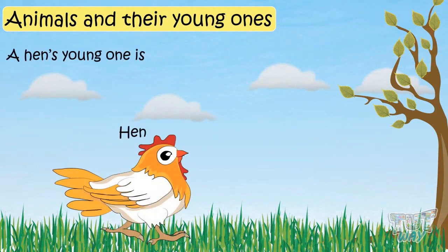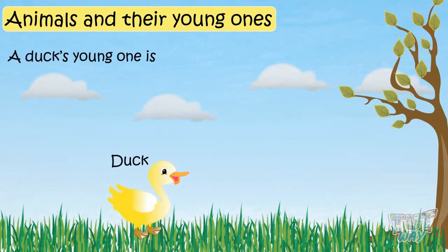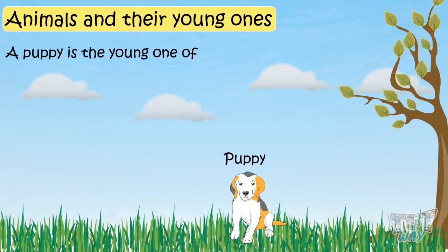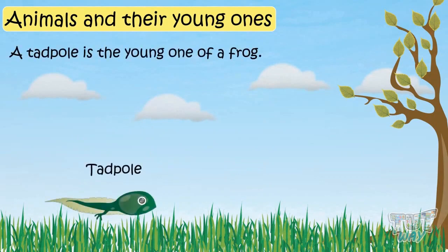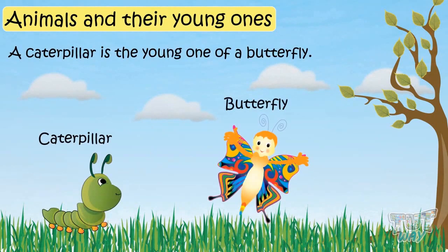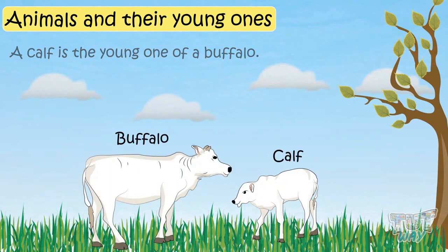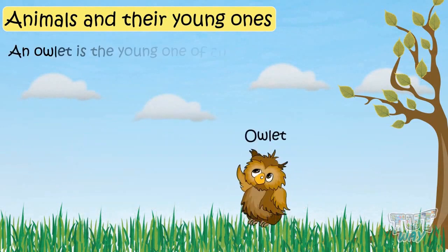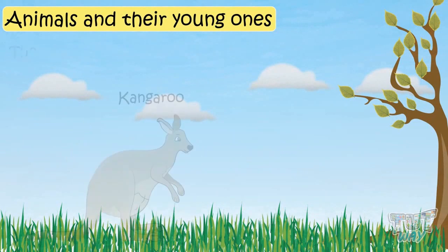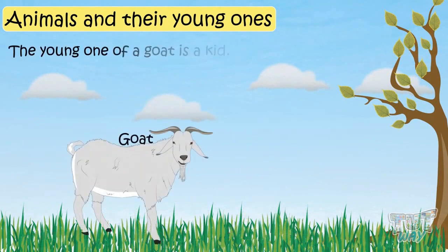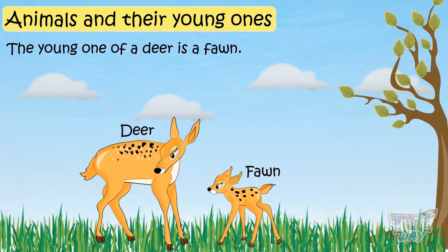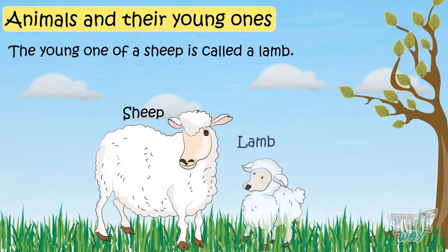A hen's young one is a chick. A duck's young one is a duckling. A cat's young one is a kitten. A puppy is the young one of a dog. A tadpole is the young one of a frog. A caterpillar is the young one of a butterfly. A calf is the young one of a buffalo. A spiderling is the young one of a spider. A piglet is the young one of a pig.